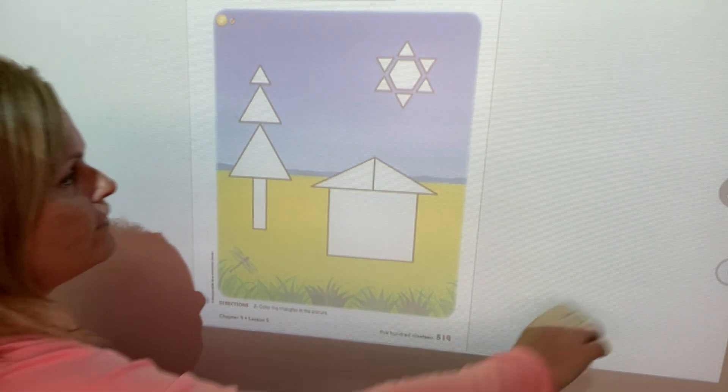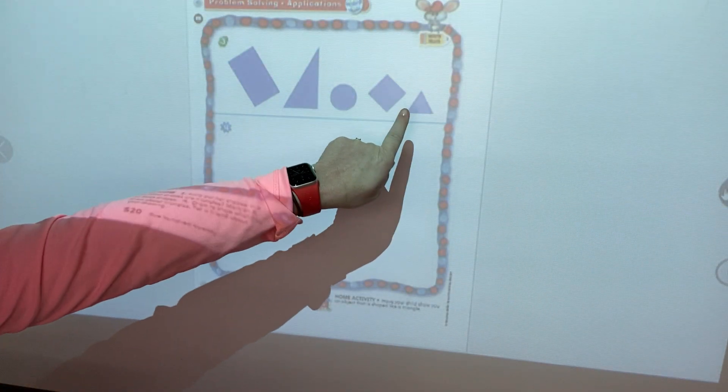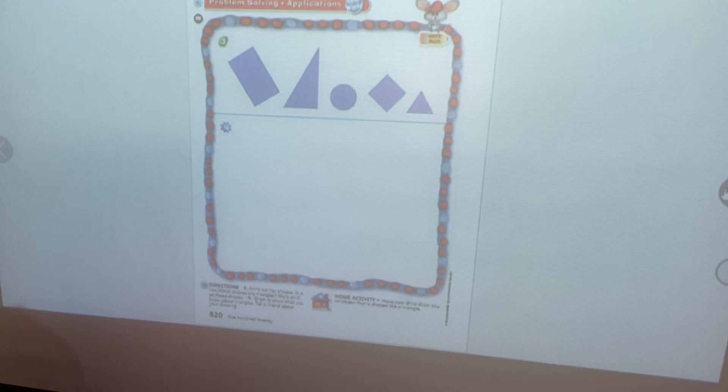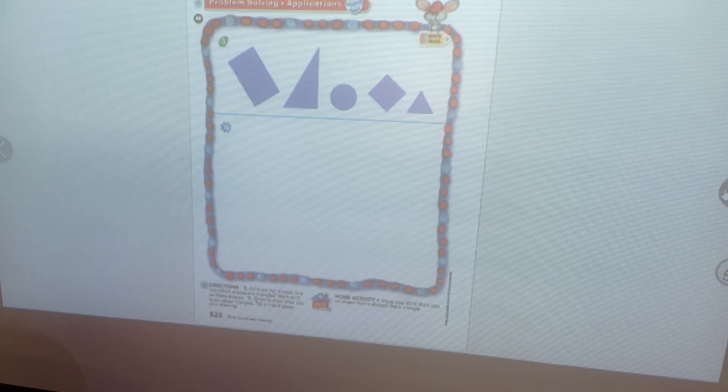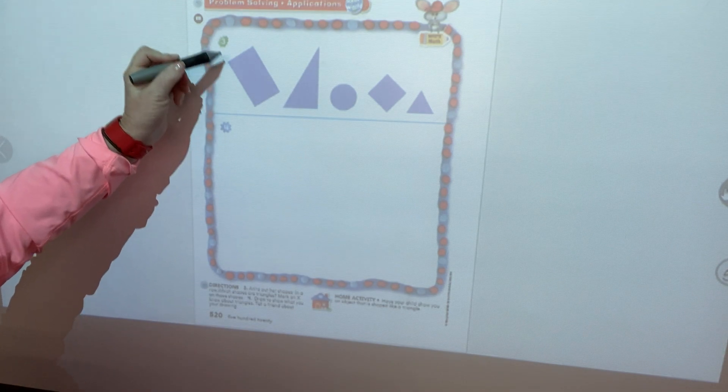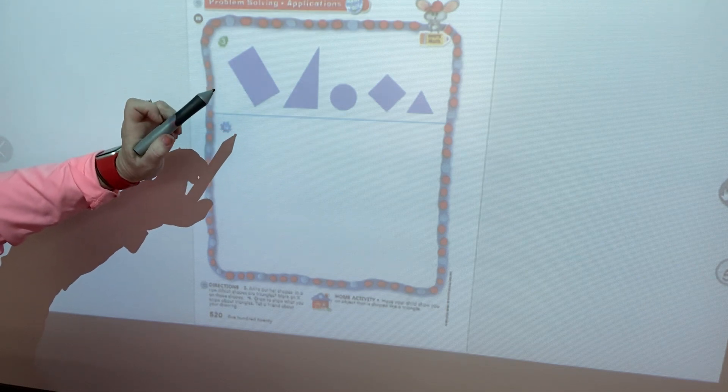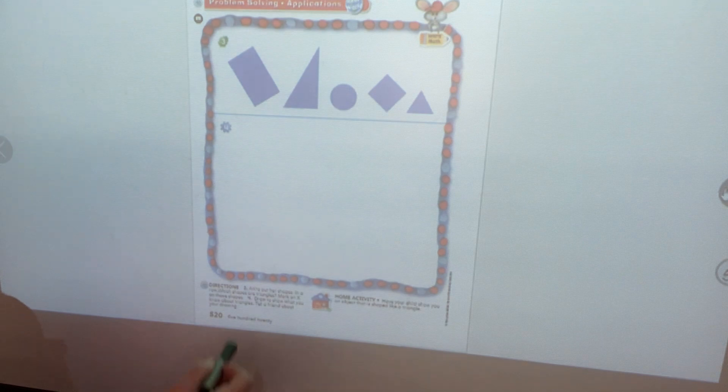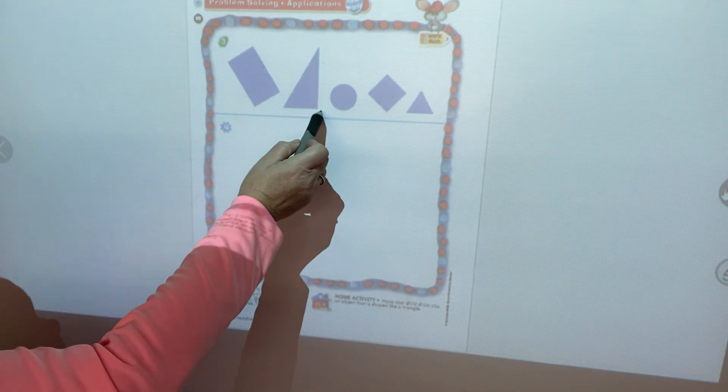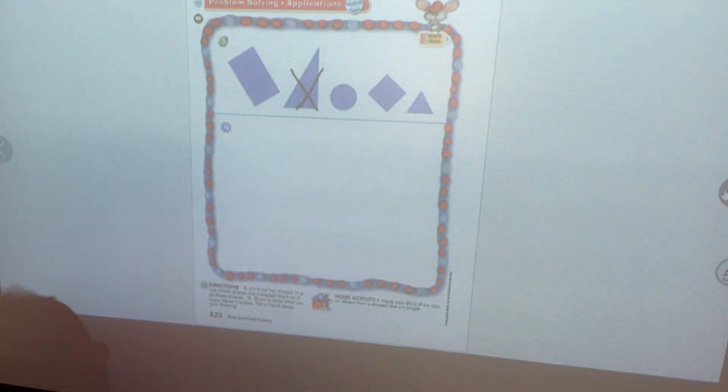We have some shapes in a row. We have to identify the triangles and put an X on them. Are you ready? Is this a triangle? No, it has four sides and four vertices and a triangle has three. Is this a triangle? It is. One, two, three corners and one, two, three sides. So we'll put an X on that.